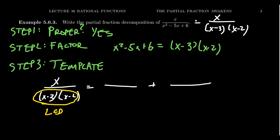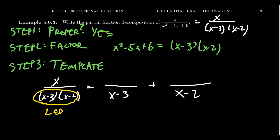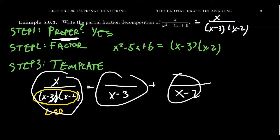The denominator tells us what the denominators of our partial fractions are going to be: x minus 3 and x minus 2, because if we add those two fractions together, the least common denominator would be (x minus 3)(x minus 2). So the denominators of our partial fractions have to be x minus 3 and x minus 2. Now, what about the numerators? This is where the idea of proper fractions is important. If the original function is proper, then we can assume these partial fractions are likewise proper fractions.